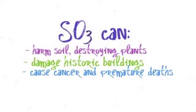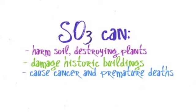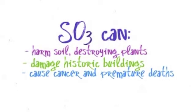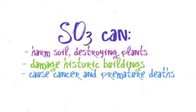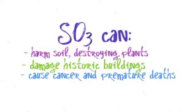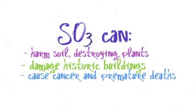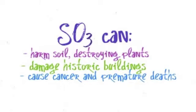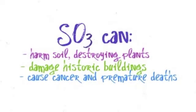The acid rain that can be created as a result of the combination of sulfur trioxide and water is destructive in many ways. It can harm soil, destroying any plants that are growing. It has been found to damage historic buildings made of limestone or marble, and there are also some ties connecting particles of acid rain to cancer and premature death.